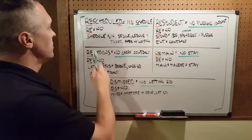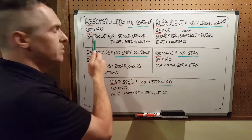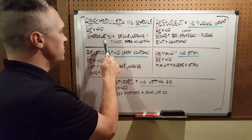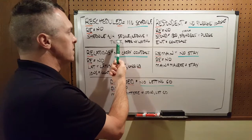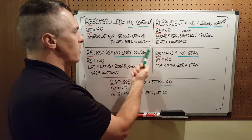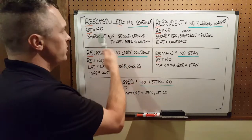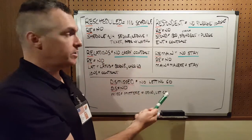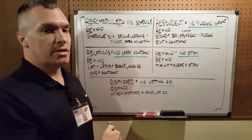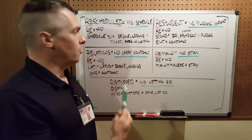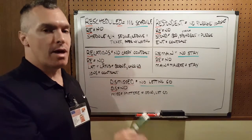The first word we're going to look at is 'rescheduled.' RE means no. Schedule, circa 14th century, means ticket, paper with writing, comes from 'schedule.' So rescheduled means no schedule. And when you put the ED on the end of it, it's a no schedule in the past. So what are we talking about when we say rescheduled? Nothing.